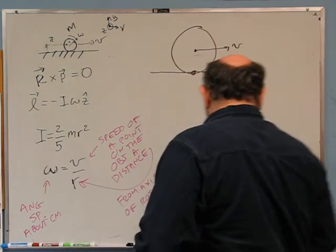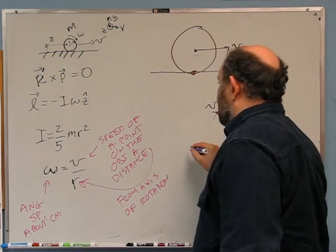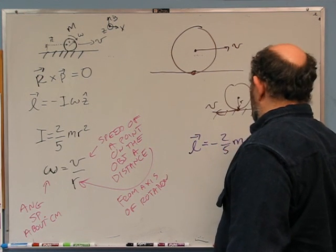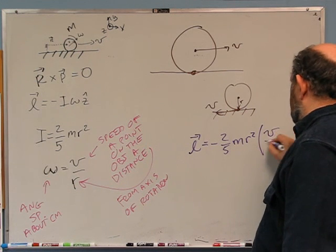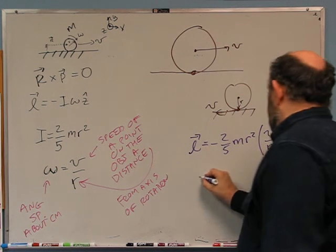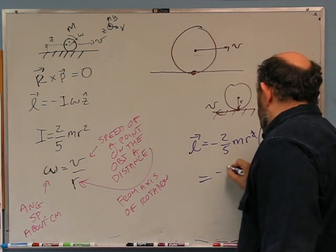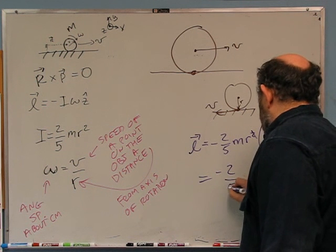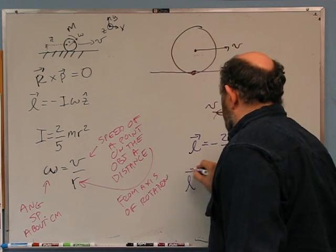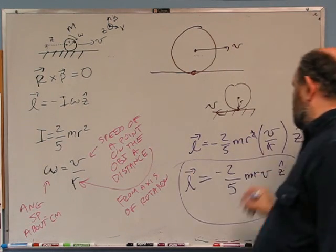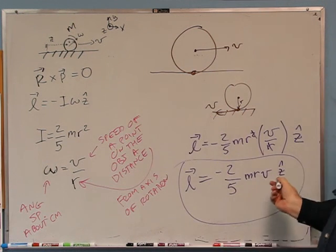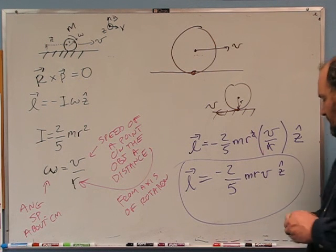Now that we know that, we can figure out the angular momentum. L vector equals minus two-fifths m r squared — that's I — times v over r, in the z-hat direction. Cancel one r, and we get: minus two-fifths m r v z-hat. That is the angular momentum of a pool ball of mass m, radius r, speed v, moving in the plus x direction, assuming plus y is up.